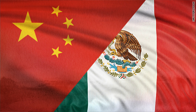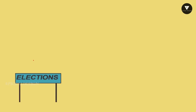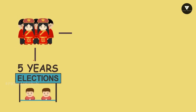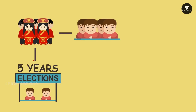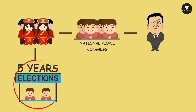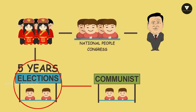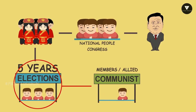Let us visit China and Mexico. In China, elections are held after every five years for electing the country's parliament called the National People's Congress. The National People's Congress has the power to appoint the president of the country. Before contesting elections, a candidate needs the approval of the Chinese Communist Party. The government is always formed by the Communist Party or its allies.